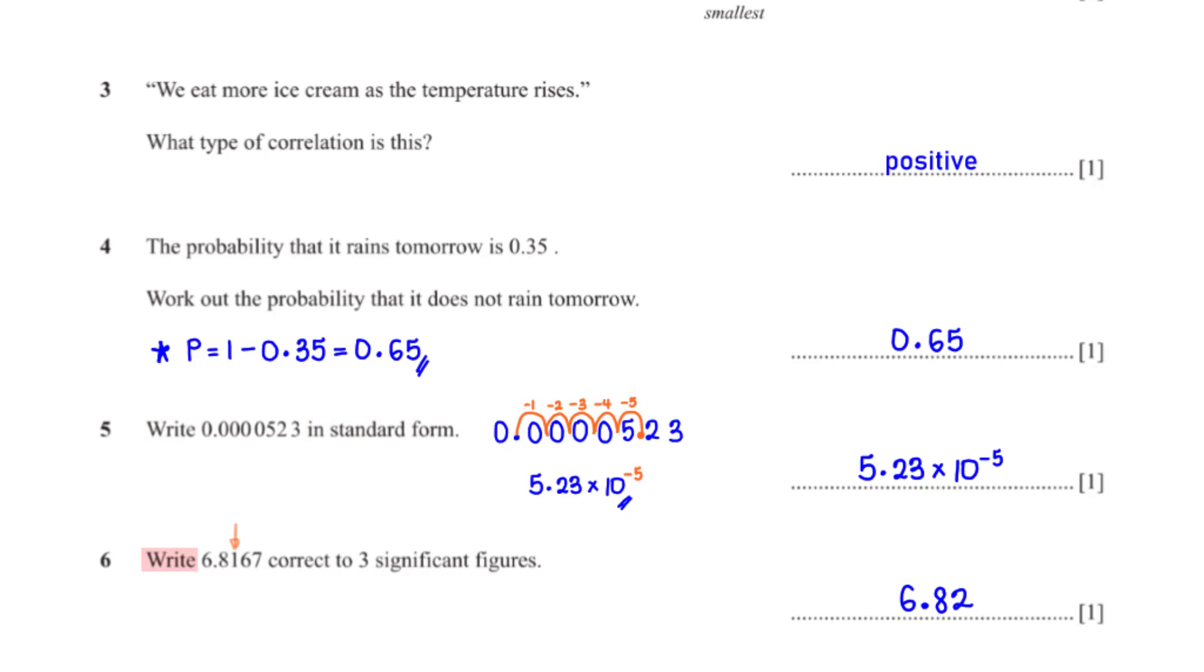Write 6.8167 correct to three significant figures. The third significant figure is 1. The number after 1, which is 6, is greater than 5. So we add 1 to 1, giving us 2. The numbers after 1 become 0. Since these 0s come after the decimal point, they are insignificant. So we have 6.82, rounded to three significant figures.